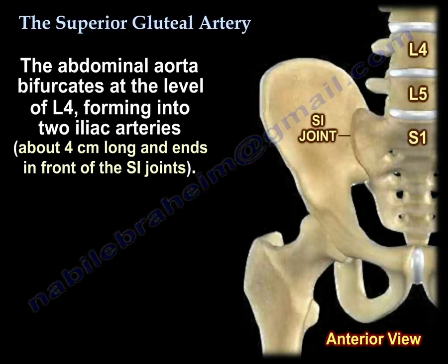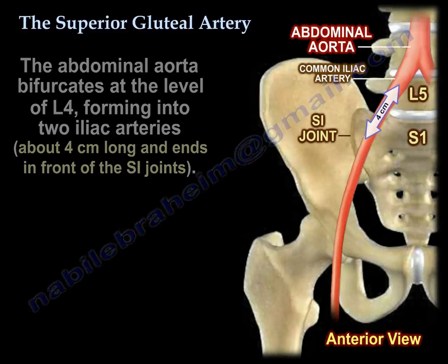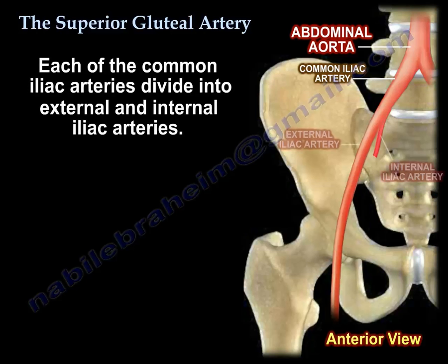The aorta bifurcates at the level of L4 and forms two common iliac arteries, which are about four centimeters long and lie in front of the sacroiliac joints. Each common iliac artery divides into external and internal iliac arteries.